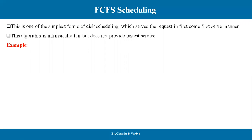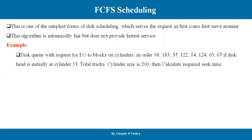For example, we consider a disk scheduling numerical. The disk queue has requests for I/O to blocks on the cylinder in order. The pending requests are: 98, 183, 37, 122, 14, 124, 65, 67. The disk head is initially at cylinder number 53. The total number of cylinders is given as 200. If the total cylinder count is not given, we look at the minimum and maximum values — taking the maximum value of 183, we go up to 200, or 199.